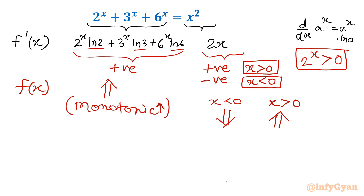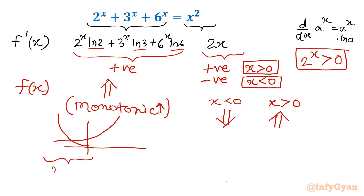So the conclusion is: the left-hand side exponential function is increasing throughout. The right-hand side parabolic function — when x is negative it is dipping down, and as per our graph we know this part is x negative. For x positive, it is monotonically increasing and coming up.